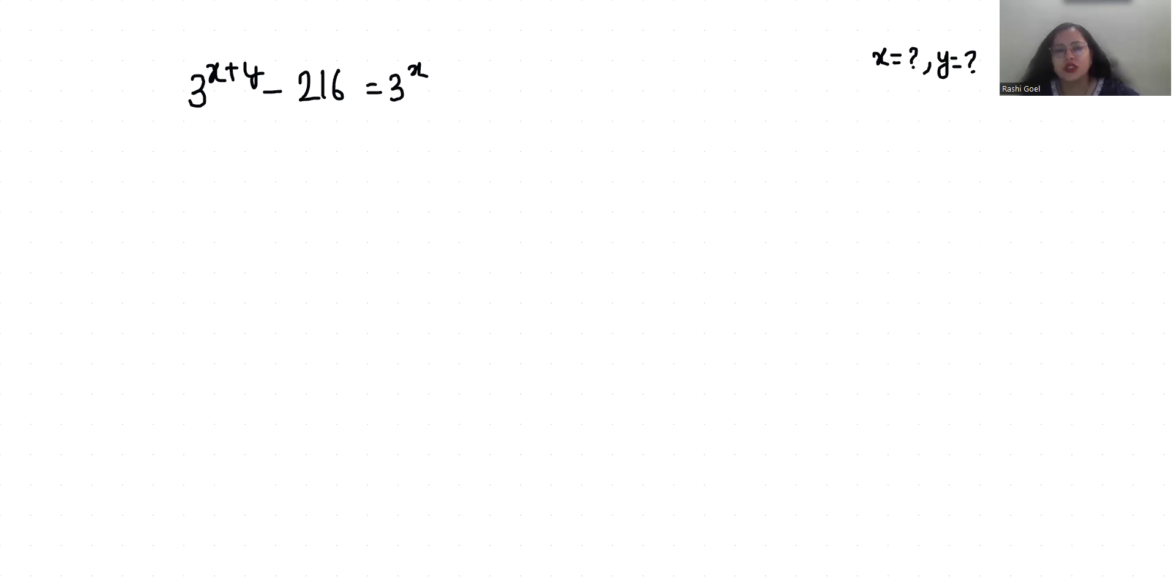So let's start with today's video solution. Now according to exponent rule x^(m+n) = x^m × x^n. So 3^x × 3^y - 216 - 3^x = 0. Now 3^x × 3^y - 3^x = 216. Now I can take 3^x as common. So 3^x(3^y - 1) = 216.